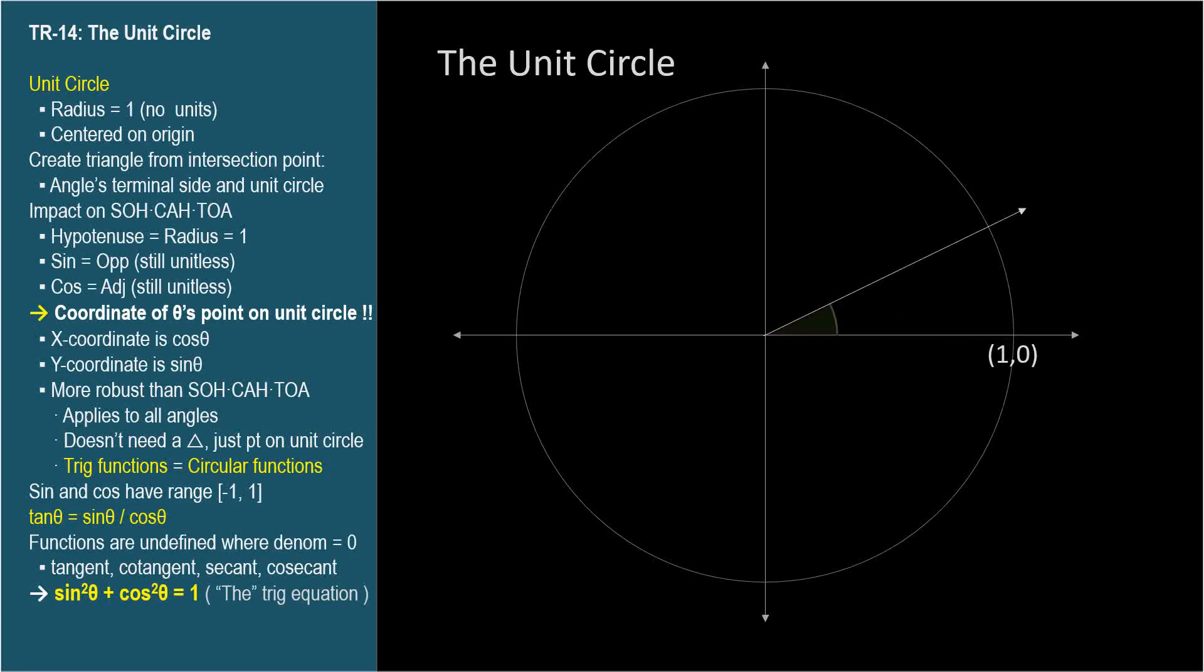In the last video we created an imaginary right triangle for an acute angle theta by choosing an arbitrary point on its terminal side. Now, we're going to choose the point where the terminal side intersects the unit circle, and we'll drop our vertical red line from this point.